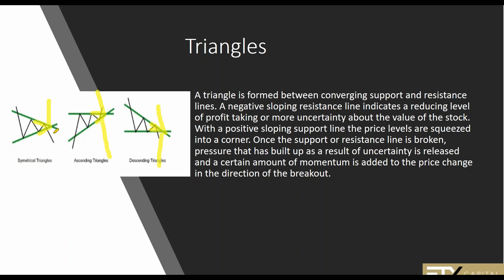At some given point, those buyers and sellers are going to make up their minds and break out either upward or downward. When they do, there is momentum added to that breakout. We can calculate the breakout — break up or breakdown — based on the movement of the triangle, specifically the difference or value between the support and resistance lines in the formation. We'll get to the formula a little bit later.